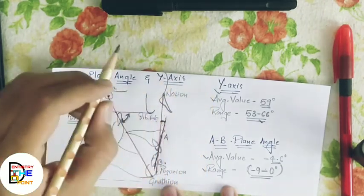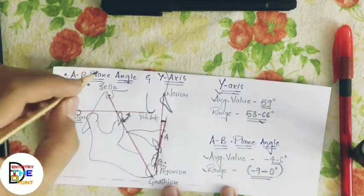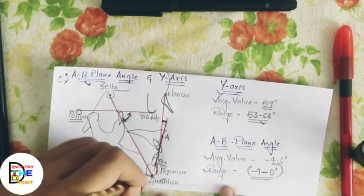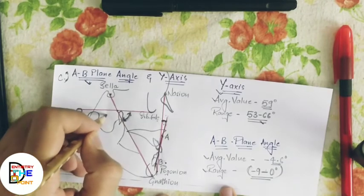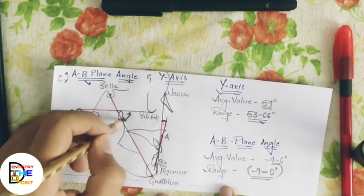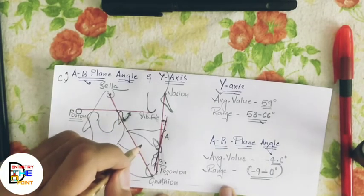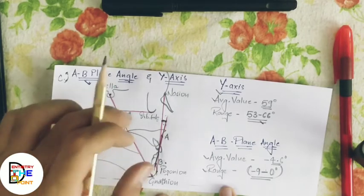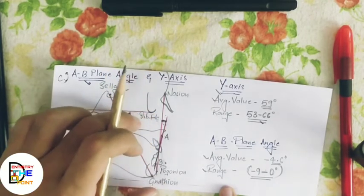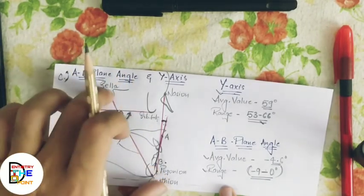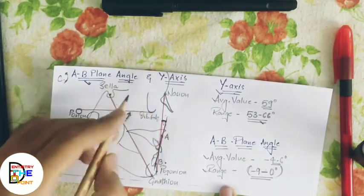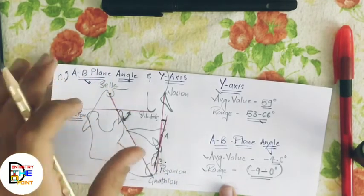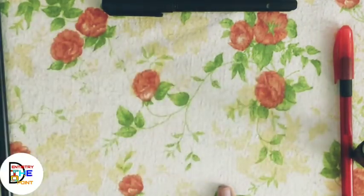The fifth and last skeletal parameter is the Y-axis, also known as the growth axis. It is formed by two lines: the first is the Frankfurt horizontal plane (from porion to orbitale), and the second is from sella to gnathion. The Y-axis indicates the growth pattern of the individual. An increased Y-axis angle indicates a vertical grower, while a decreased angle indicates a horizontal grower.